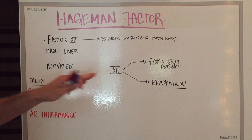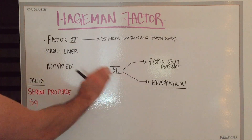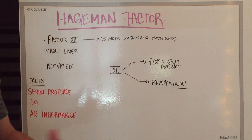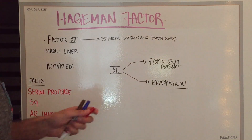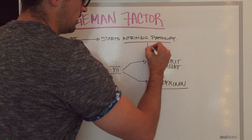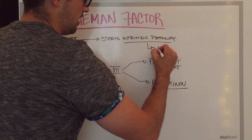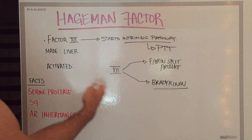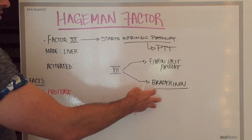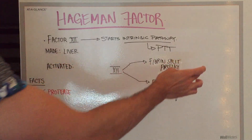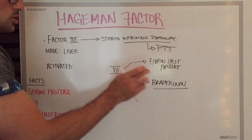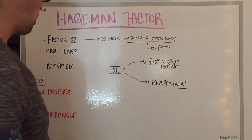Factor 12 is also part of the partial thromboplastin time (PTT), which means the intrinsic pathway is inherently measured by PTT. To summarize: activation of factor 12 when it contacts collagen leads to increased bradykinin and increased fibrin split products. Hope that helped!